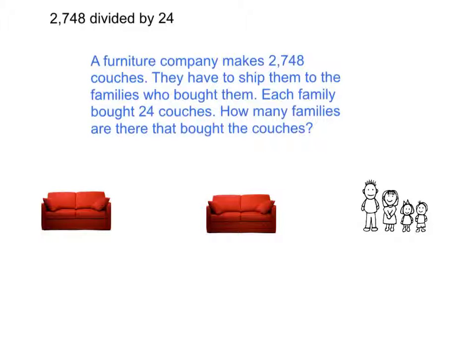2,748 divided by 24. A furniture company makes 2,748 couches. They have to ship them to families who bought them. Each family bought 24 couches. How many families are there that bought the couches?